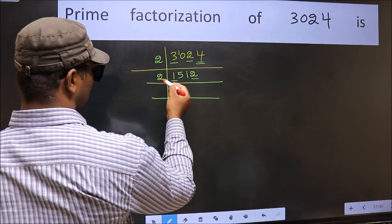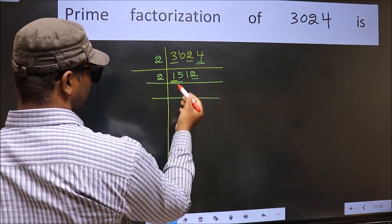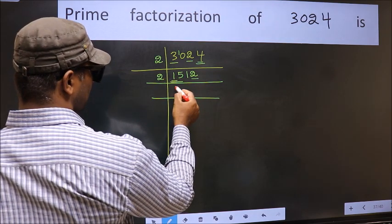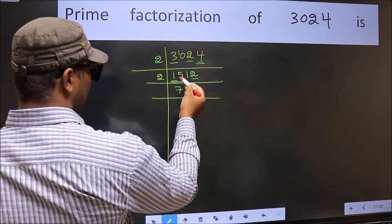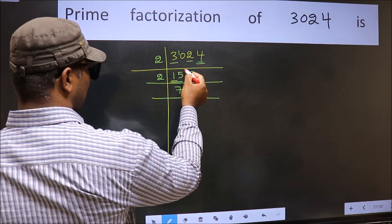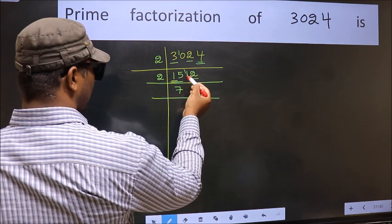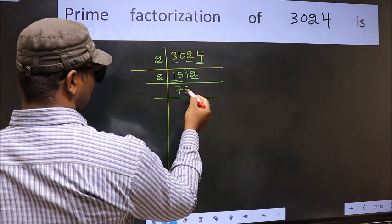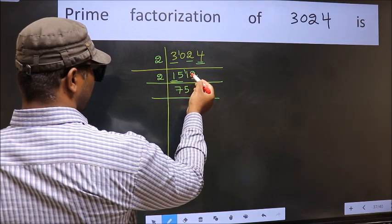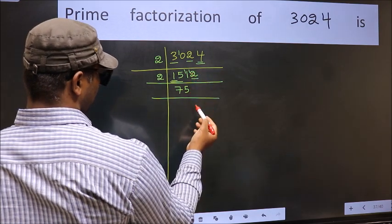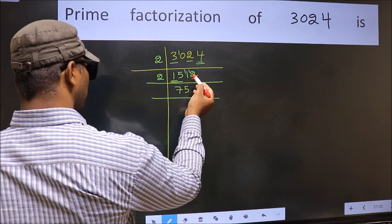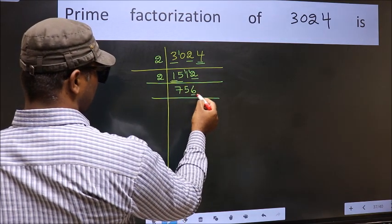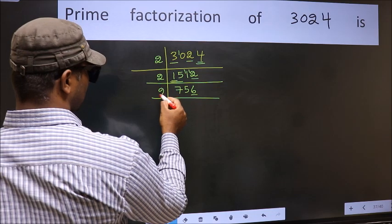First number 1, smaller than 2, so take 2 numbers: 15. A number close to 15 in the 2 table is 2 times 7 is 14. 15 minus 14 is 1, carried forward 11. A number close to 11 in the 2 table is 2 times 5 is 10. 11 minus 10 is 1, carried forward 12. When do we get 12 in the 2 table? 2 times 6 is 12. Now the last digit is 6, so take 2.